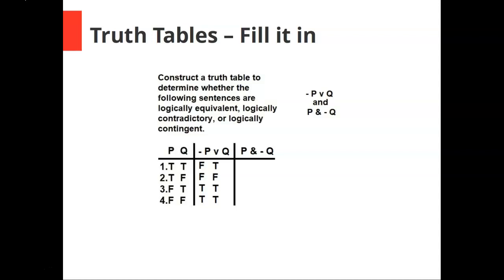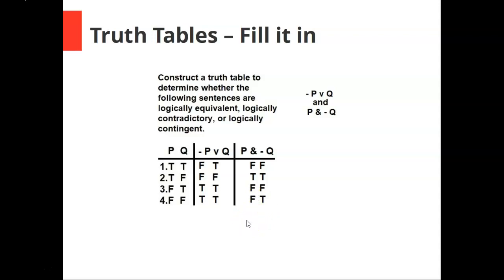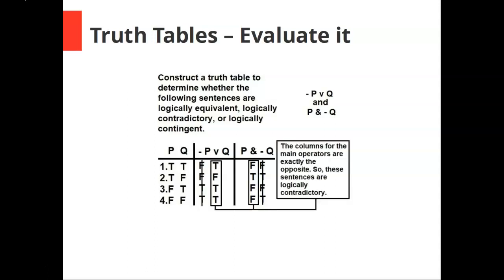Line two is the only line where both disjuncts are false. Moving to the second sentence, we fill in the not q column before the conjunction column — take q and flip it: false, true, false, true. The conjunction of p and not q is only true when both conjuncts are true, like on line two. Now evaluating, we only care about the main operator columns, and they're exactly the opposite. So these two sentences are logically contradictory.